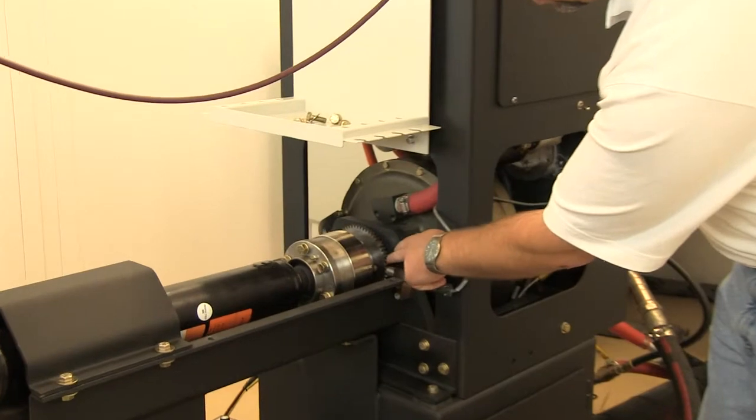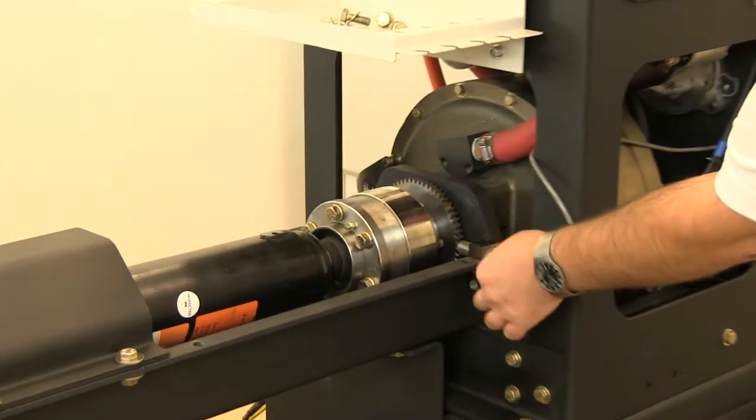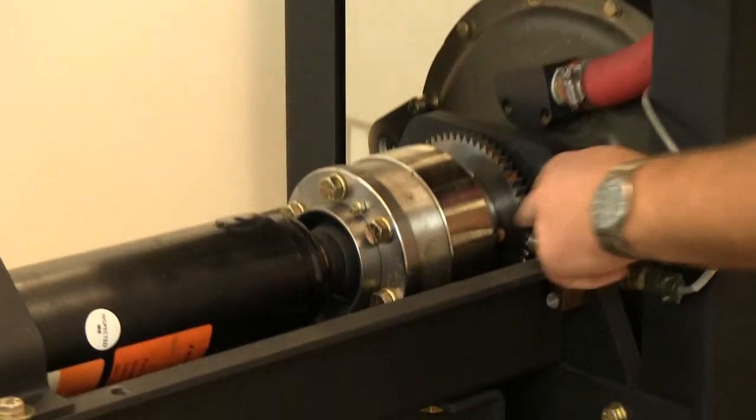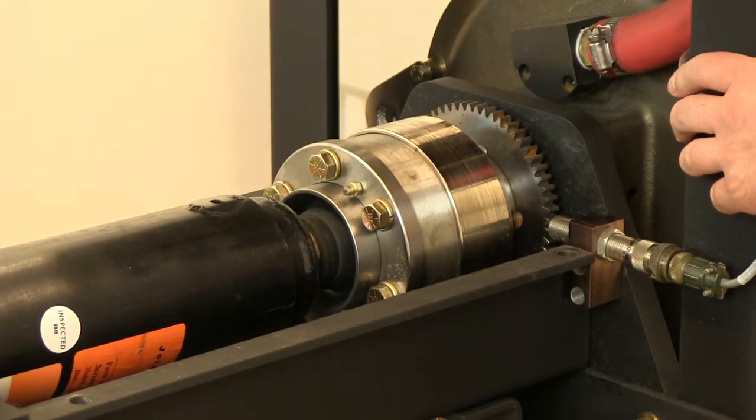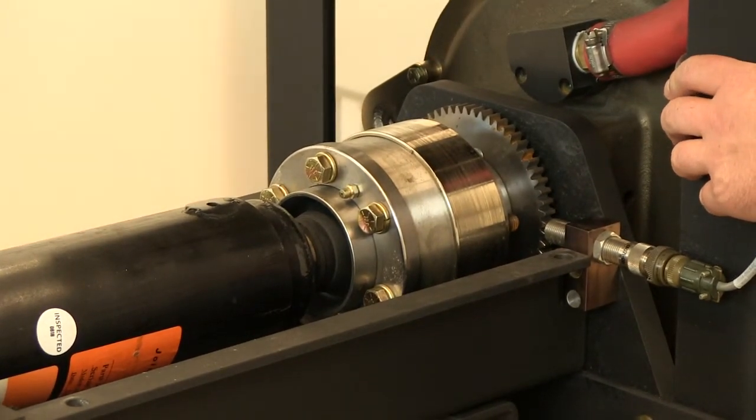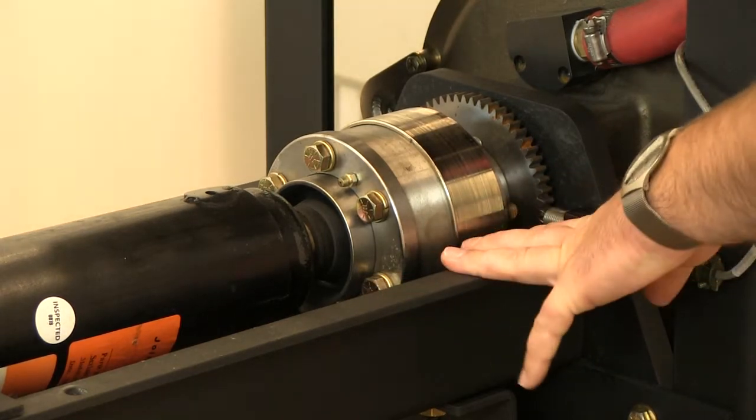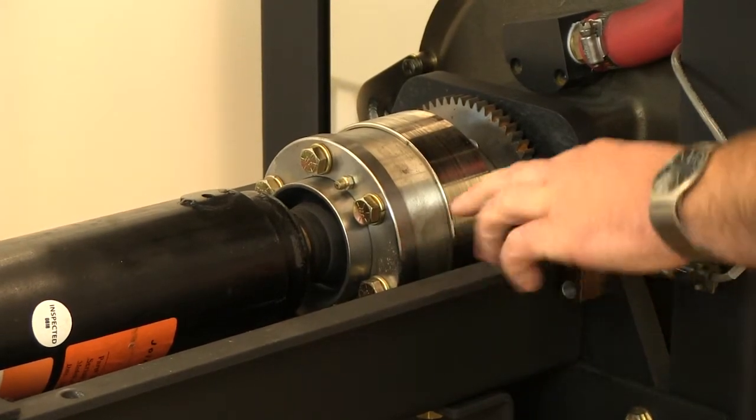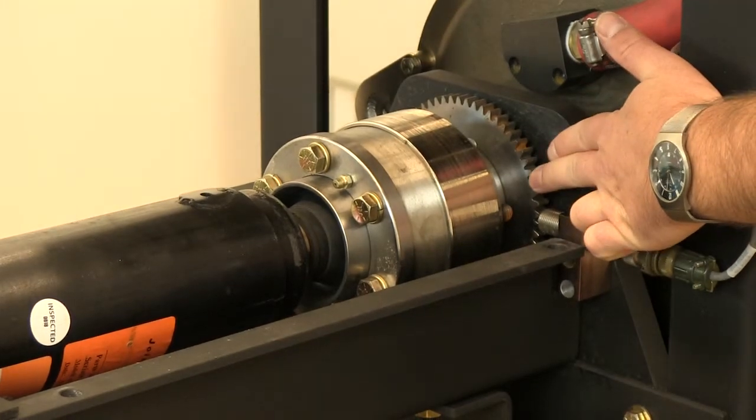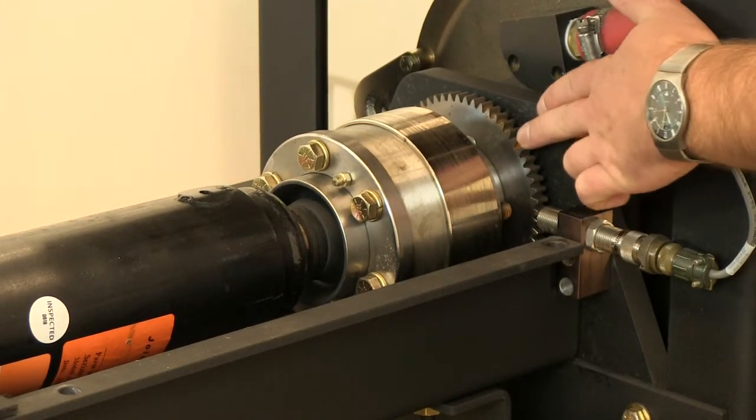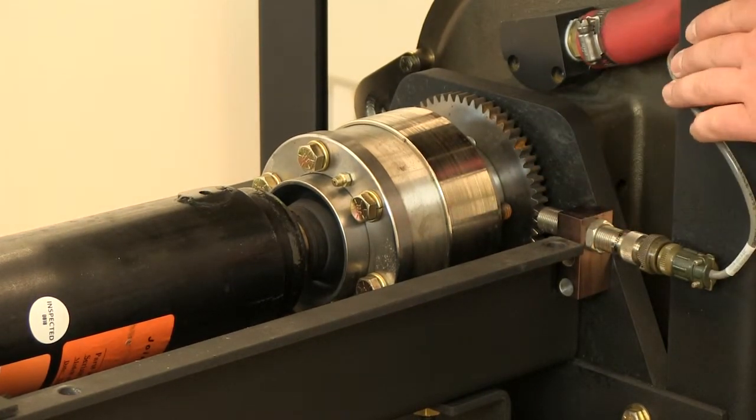As you'll notice right here, you have a 60-tooth gear, and this is our magnetic sensor. This is where the dynamometer gets the entire RPM information. If you get a lot of grease buildup in the rear shaft or rear part of the drive shaft cover, you can get grease with little metallic filings built up between the teeth.